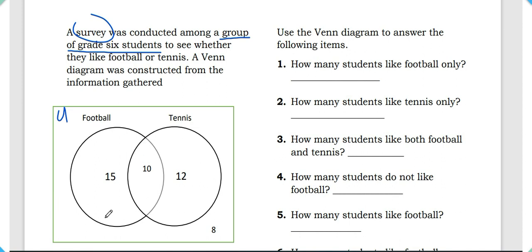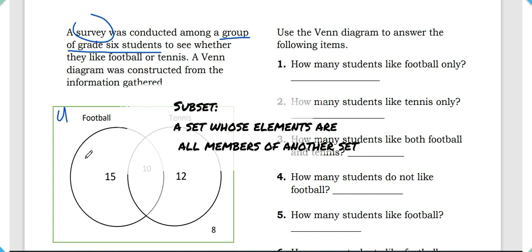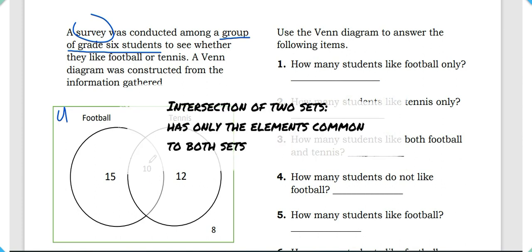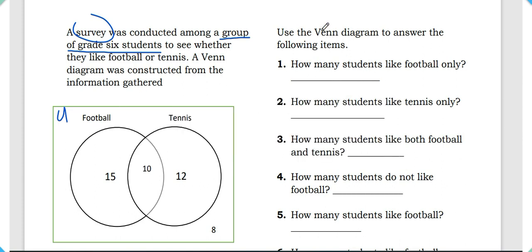We group those students and call these smaller sets subsets. As you can see, our group of students that like football overlaps with our group that like tennis. These two sets are overlapping because they share at least one common element — in our case, 10 students fall within both sets. We call this shared area the intersection.